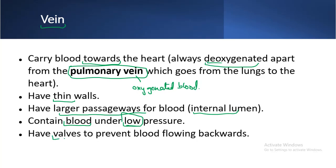Veins have valves to prevent blood from flowing backwards. These valves act like doors that close after blood passes through, stopping it from flowing in the wrong direction.